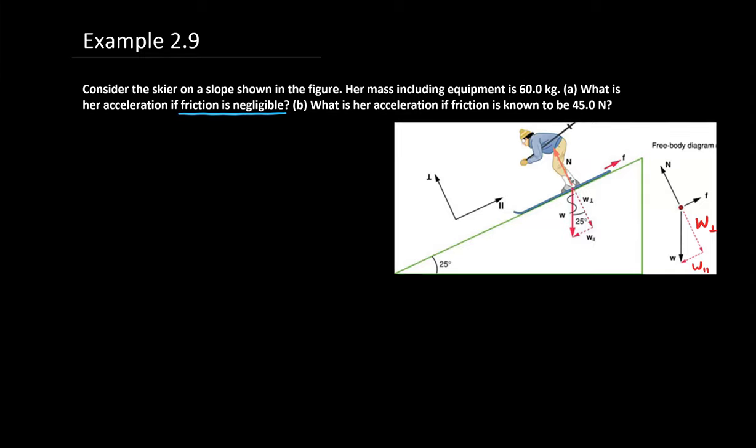So that means the force of friction is zero, it's not there. And then for part B, we're going to say, okay, now there is friction. We know her friction is 45 newtons, so what would her acceleration be then?